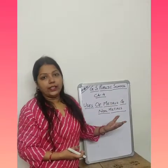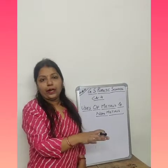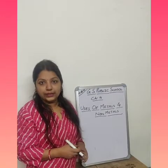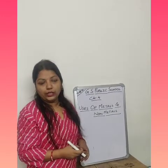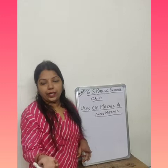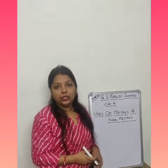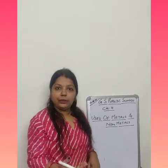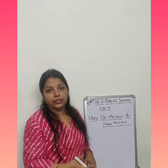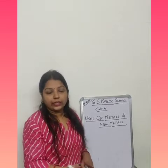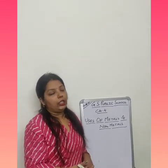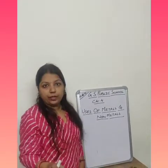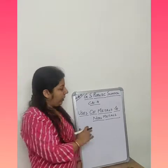Write point-wise: 5 uses of metals and 5 uses of non-metals. For metals, we can use them as utensils - for example, steel and copper. We can use them in industry as machines - for example, iron. For non-metals, you can write: paper, wood, soil, oxygen. There are lots of uses of metals and non-metals.